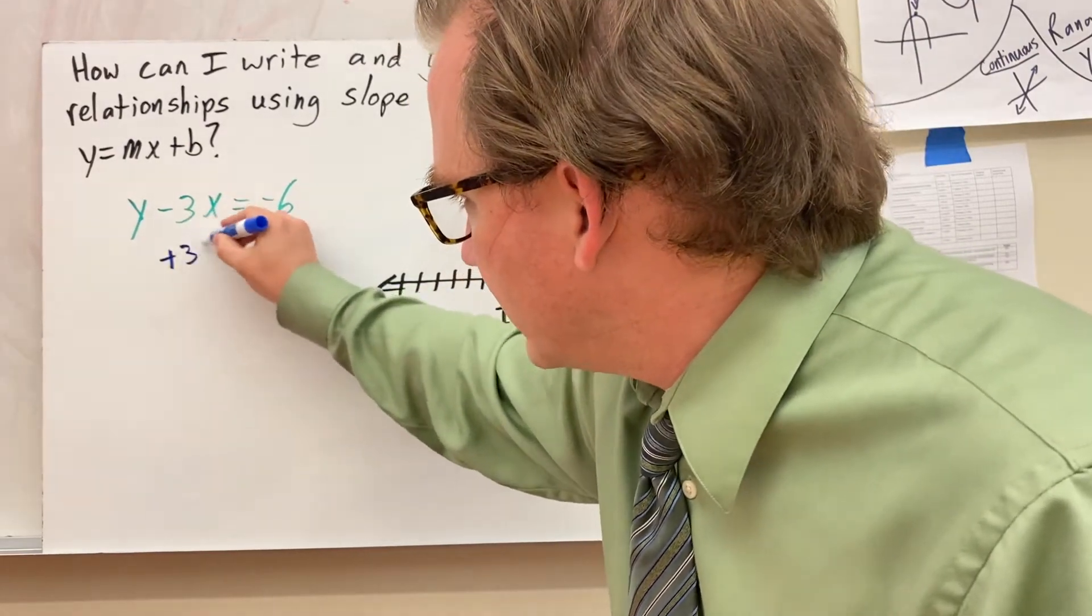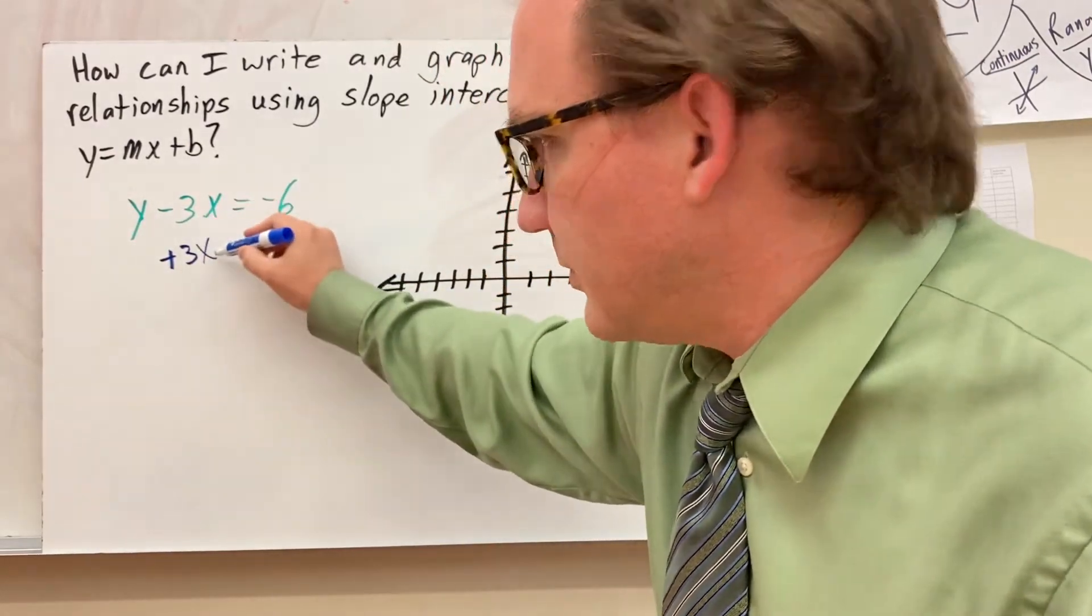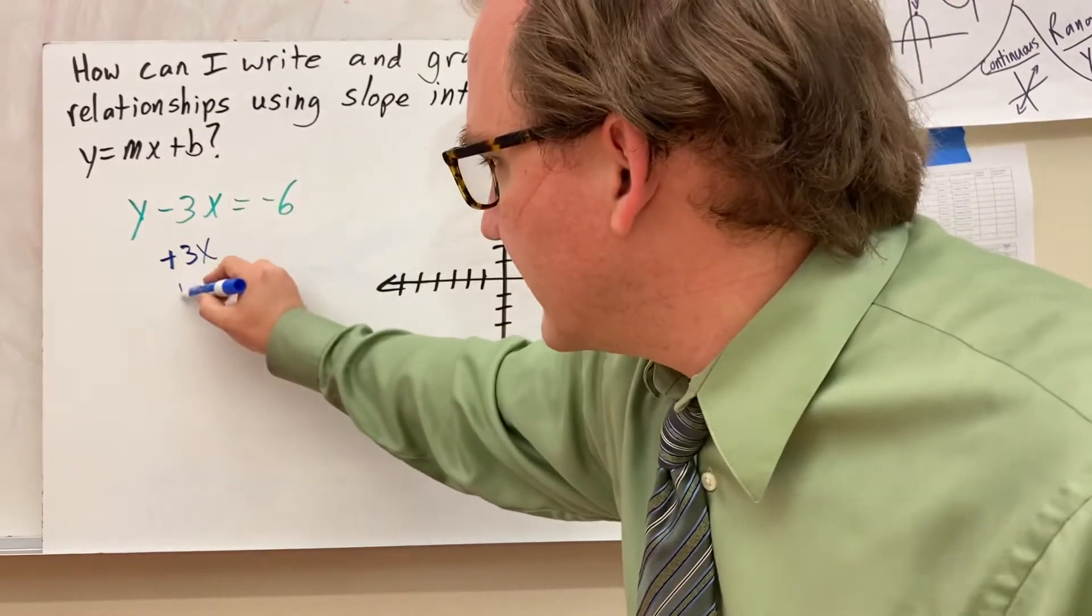So I do plus 3x. Minus 3x plus 3x, that's going to cancel out, and that's going to equal y.